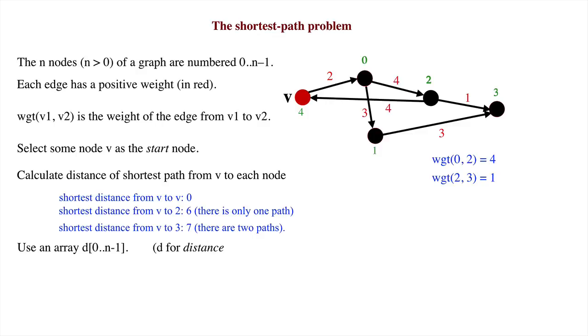We'll store the distances in an array D. D standing for distance, of course. So, upon termination, for each node W, D sub W will contain the distance along the shortest path from V to W. To the right is the resulting array D for our example graph.